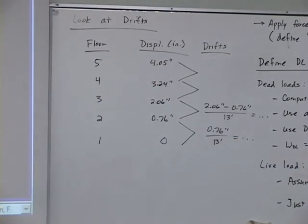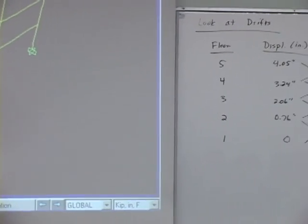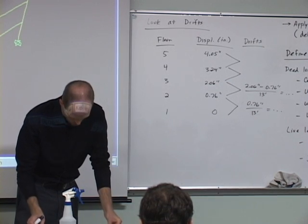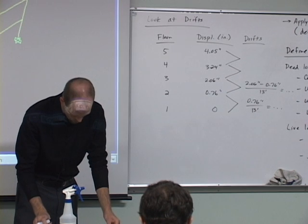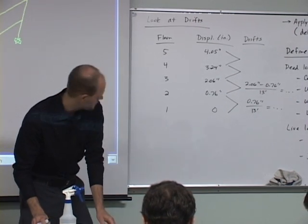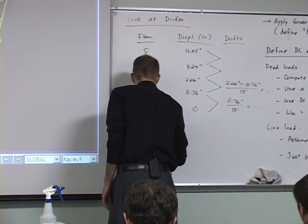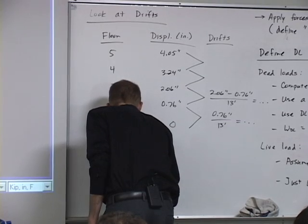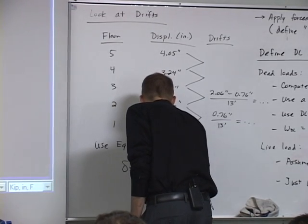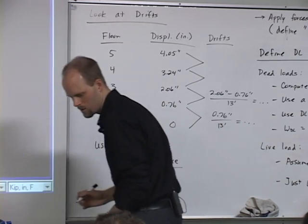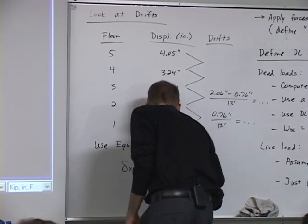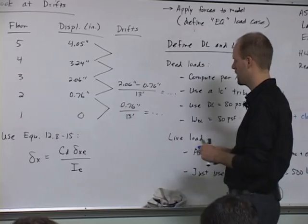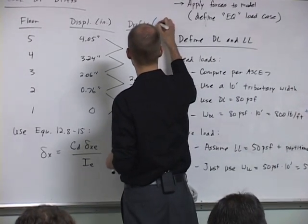And then what you have to do is, remember we divided by R when we did all this? So you have to use the equation in the code that scales things back up. So we have to use the equation in the code. Equation 12.8-15.